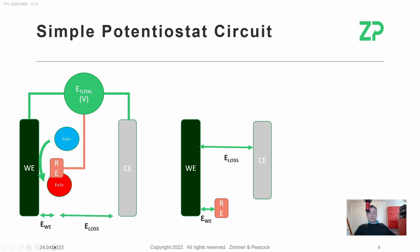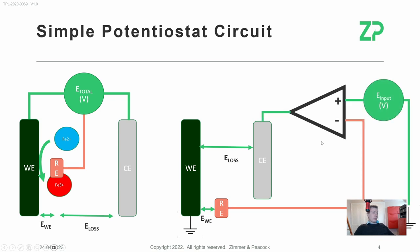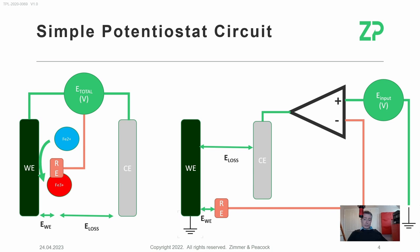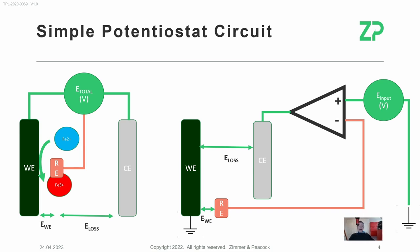How does a potentiostat work? This is one of the simplest designs for a potentiostat. It uses an operational amplifier, which in this case is working as a control amplifier.